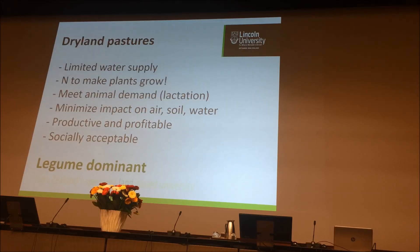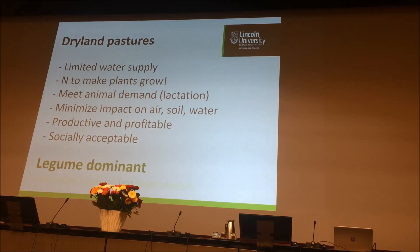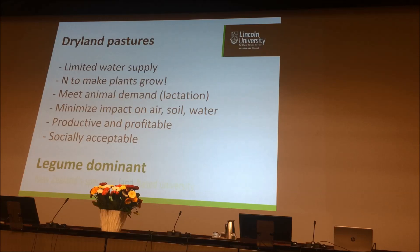So in our dryland pastures we have a limited water supply. We know nitrogen makes plants grow. We know we have an animal that is going to lactate and so it's going to be fed during lactation. But we also know we have a lot of environmental issues to deal with, so we need to minimise our impact on air, soil and water, be productive and profitable, and potentially more socially acceptable than the dairy systems I was talking about yesterday.